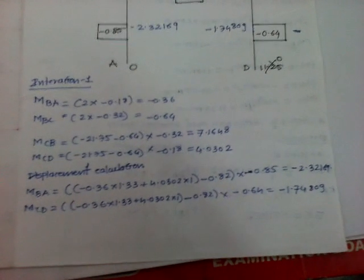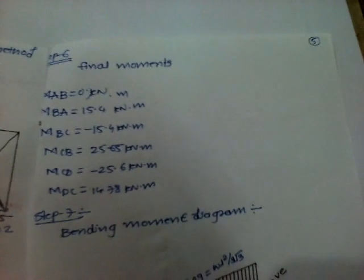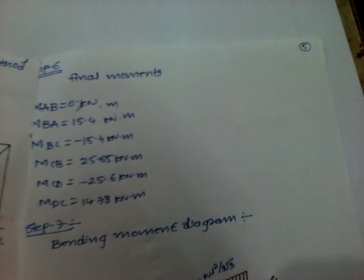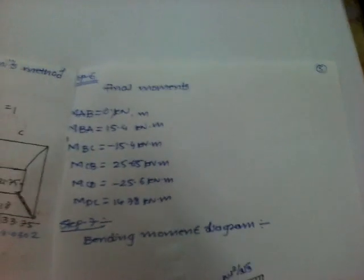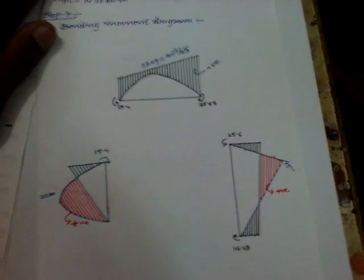Now determine all the final moments. These are the final moments. You know how to calculate final moment: fixed moment plus 2 multiply by that particular value of that particular joint plus 1 multiply by away joint. So now this is a bending moment diagram, it is looking like very beautiful.